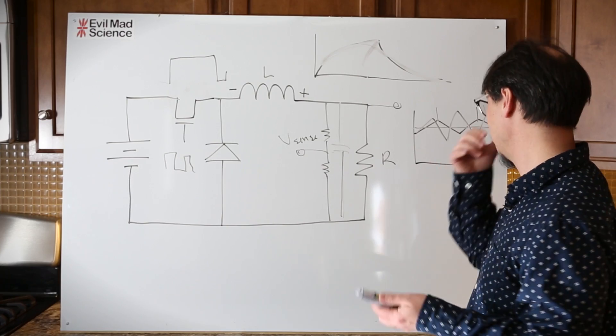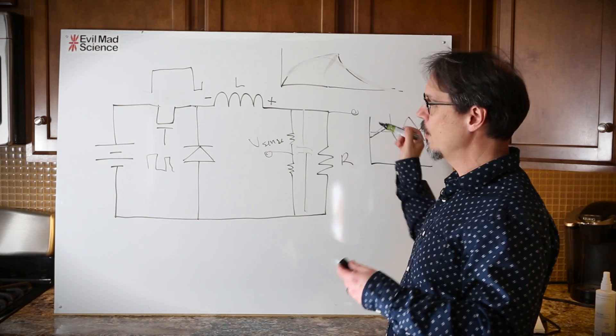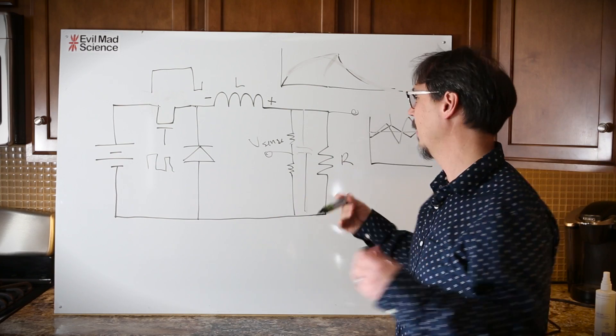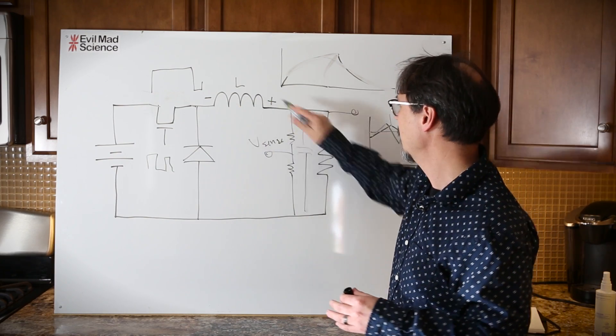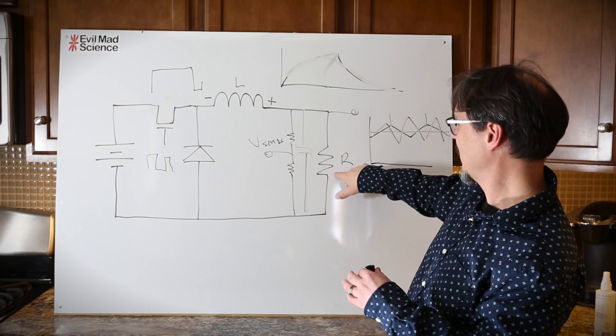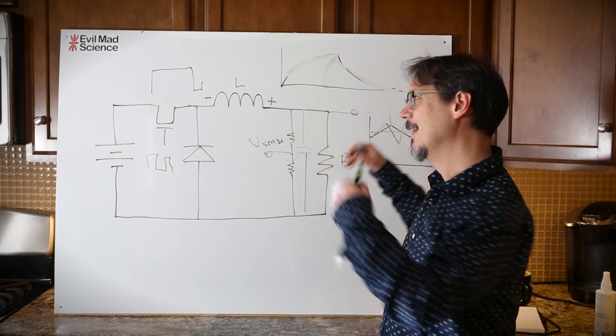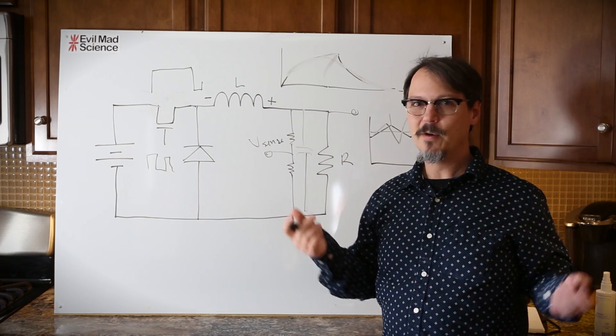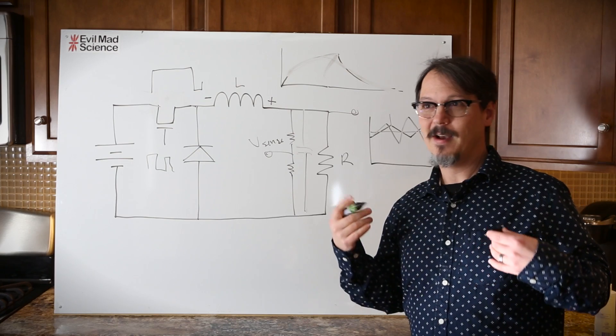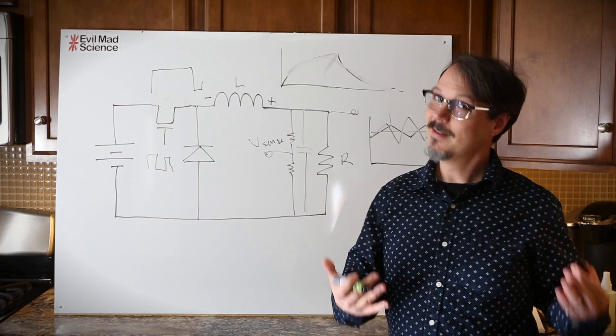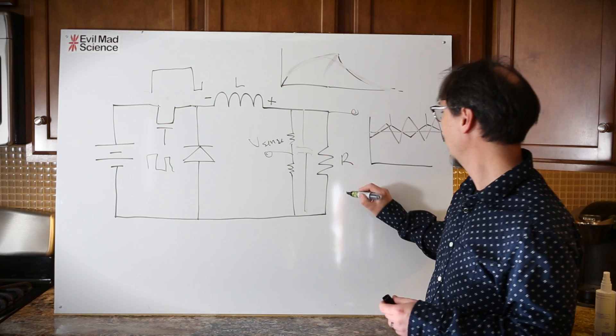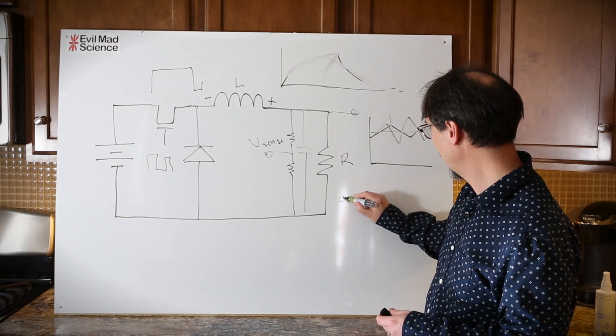Power out equals power in times an efficiency factor. Since there's no real lossy components in this except for the load and the sense, this thing can be, in the case of the AL8805, the datasheet specs up to 98% efficient. That's really good.